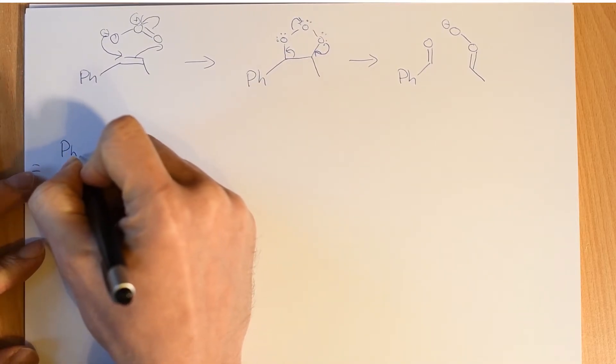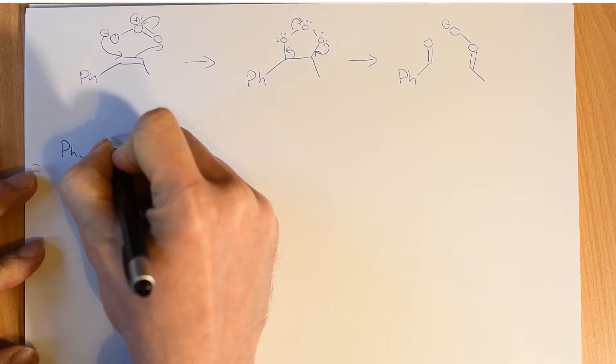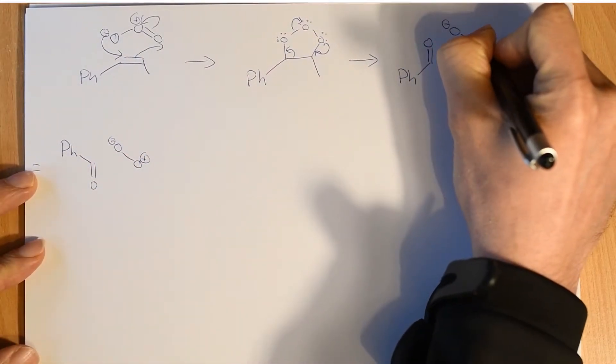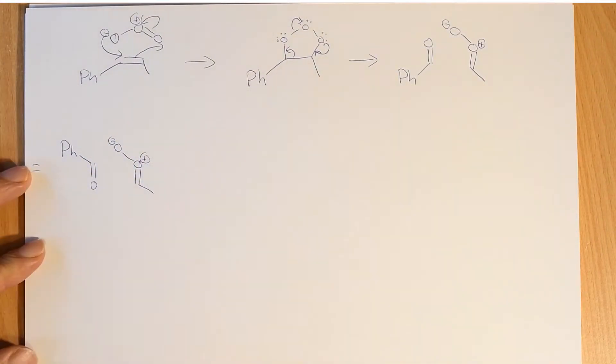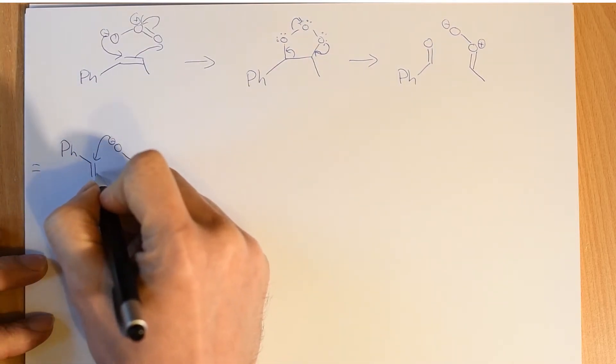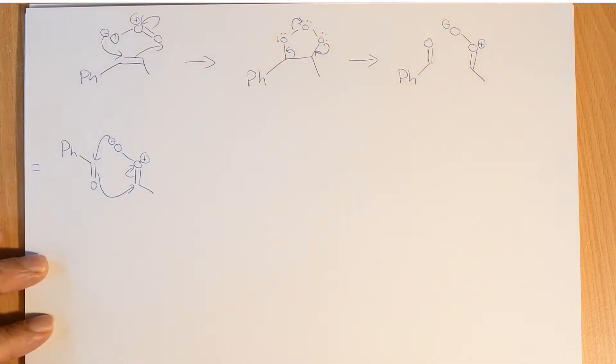So let me draw those out in the opposite orientation down here. A little bit equals two sign, because I'm drawing out exactly the same thing, except just in a different orientation. I left out a positive charge up there. And now these are going to undergo 1,3 dipolar cycloaddition. So dipole attacks one end, and the double bond breaks and attacks the other end, relieving the positive charge in the center.